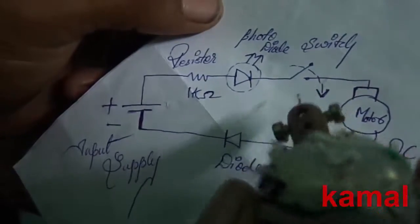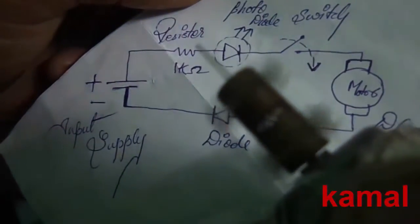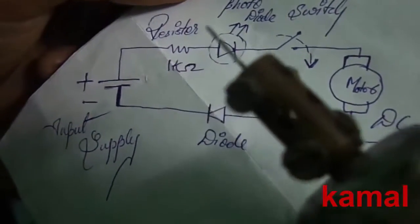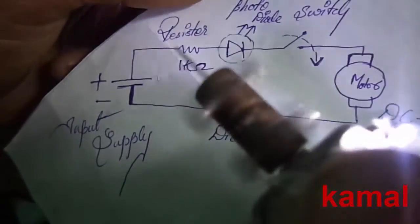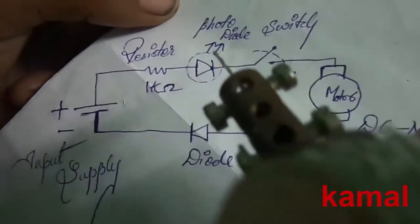The input voltage supplies current to the whole circuit. The resistor protects the LED. When you press the switch, it closes and the motor will start running. When you release the button, it disconnects and the motor will stop.